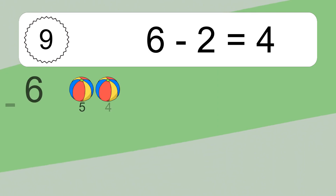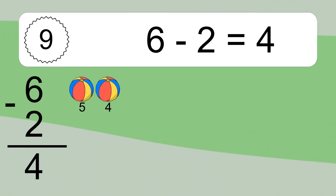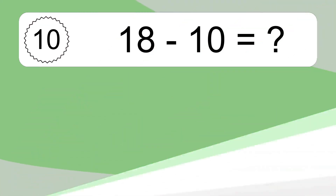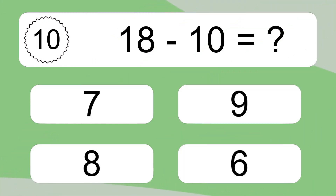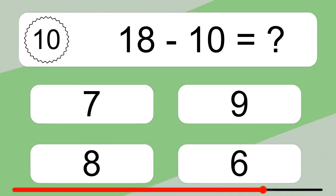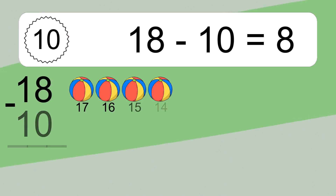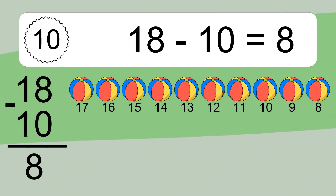6 minus 2 equals 4. Let's count it: 5, 4. 18 minus 10 equals what? 18 minus 10 equals 8.